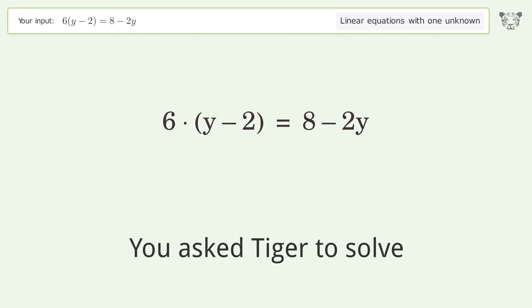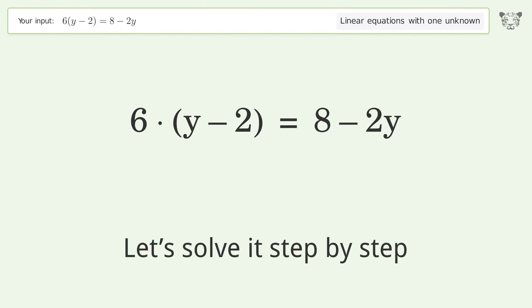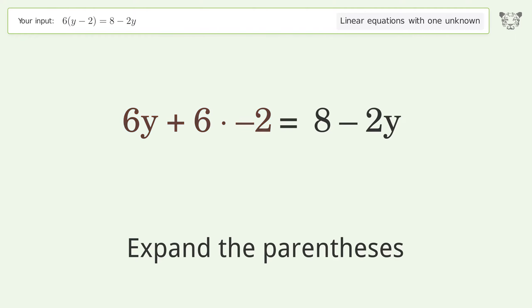You asked Tiger to solve this - it deals with linear equations with one unknown. The final result is y equals 5 over 2. Let's solve it step by step. Simplify the expression, expand the parentheses, simplify the arithmetic.